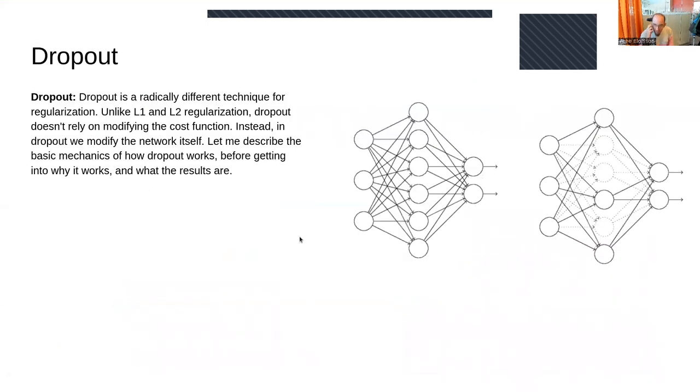Another method is dropouts - you skip some parts of the network randomly in each iteration. This is a way of training many different networks in parallel, making different parts of the network learn the same thing. It's an ensemble method that works very well.